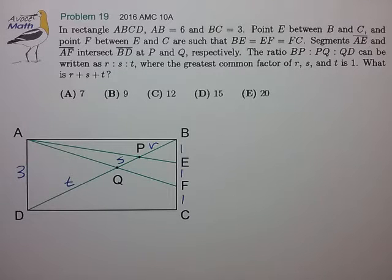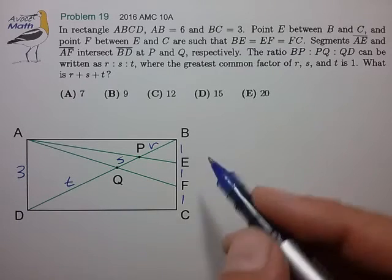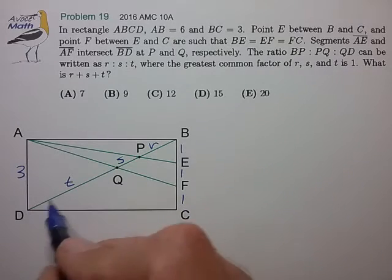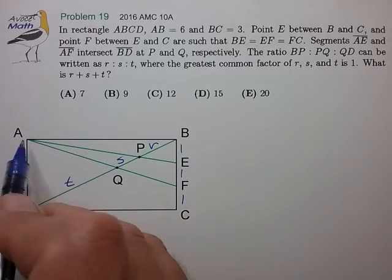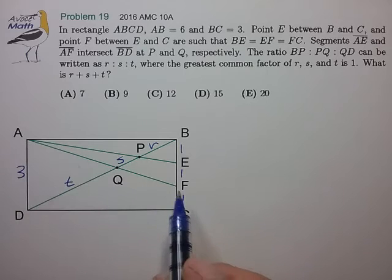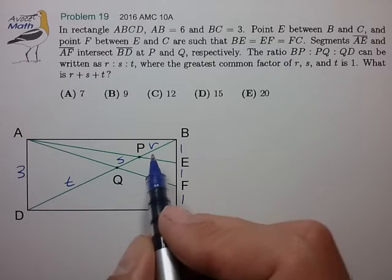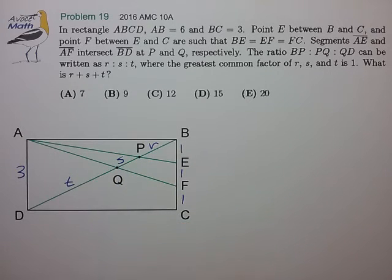Here's our first multiple similarity example problem from the 2016 AMC-10A. It's a bit wordy, so let me just break it down to get to the meat of the problem. We have a rectangle of side length 3, and side BC is trisected into three equal lengths. Diagonal DB is drawn, along with line segments AE and AF to intersect at points P and Q. We're trying to find the ratio of the smaller line segments R to S to T. That's basically the essence of the problem.